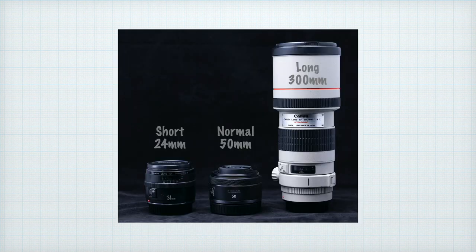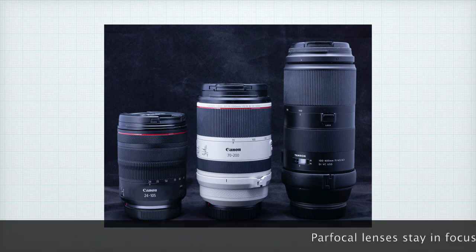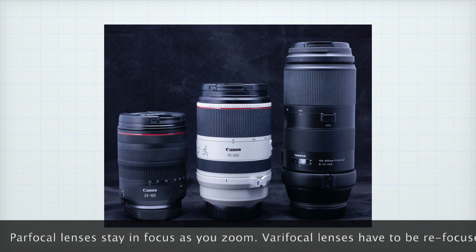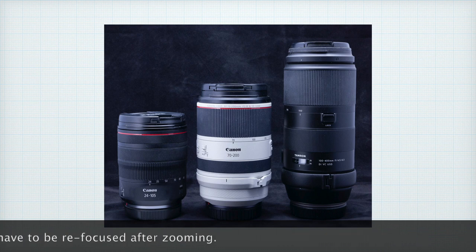The most common way we describe a lens is by its focal length, such as 24mm, 50mm, or 300mm. They are also described by relative focal length, such as short, wide, normal, long, or telephoto. Prime lenses have a fixed focal length, while zoom lenses offer a range of focal lengths, such as 24-70mm, 70-200mm, 100-400mm, and on. There are two types of zoom lenses: power focal lenses stay in focus as you zoom in and out, and vary focal lenses need to be refocused when changing focal length.